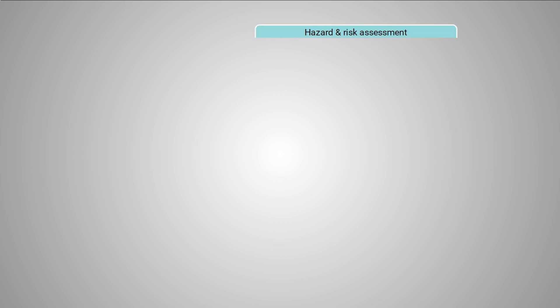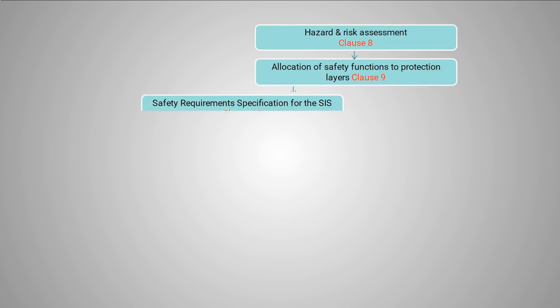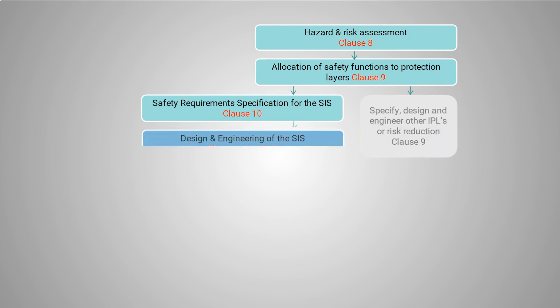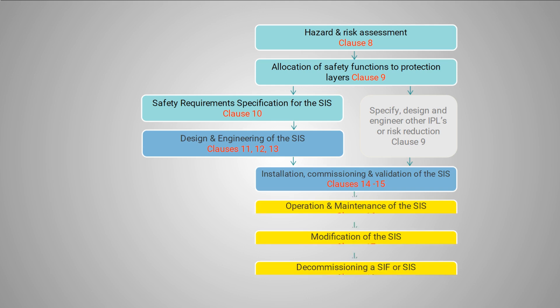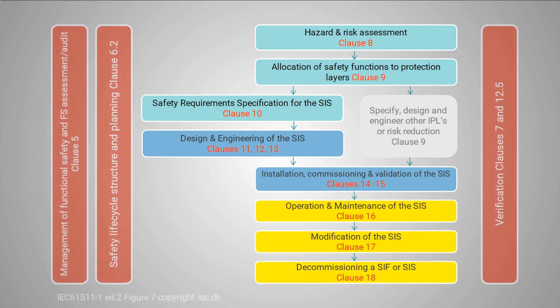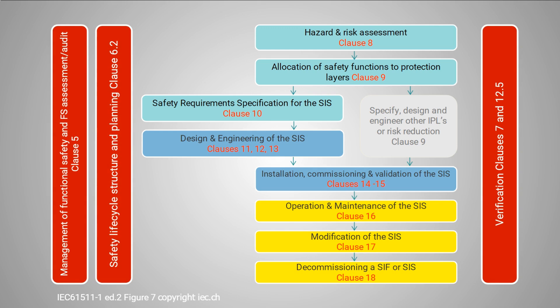This is an outline of the SIS Safety Lifecycle from IEC 61511. It's effectively a flowchart of the stages of different activities needed to develop a Safety Instrumented System, or SIS, and then operate it until it's decommissioned. Following slides will break down the typical activities in each stage.